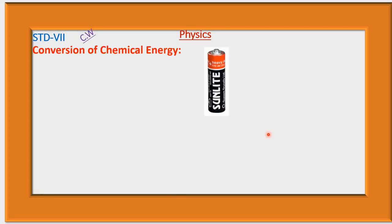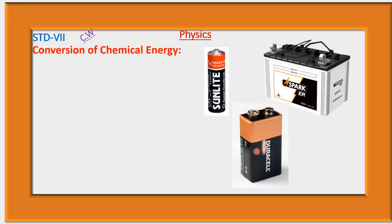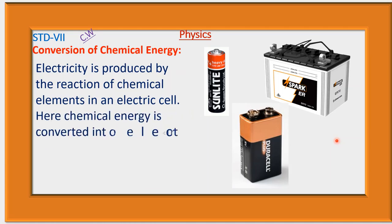Now, conversion of chemical energy. Here is an electric cell — a dry cell battery. Electricity is produced by the reaction of chemical elements inside an electric cell. Chemical substances are used inside this battery, and when the chemical reaction takes place, we get electricity from this battery. Here, chemical energy is converted into electrical energy.